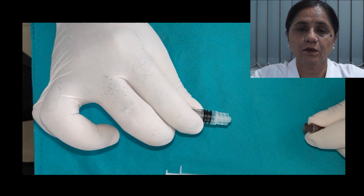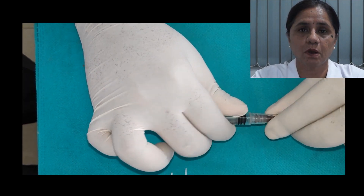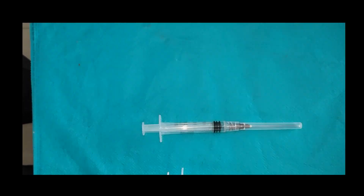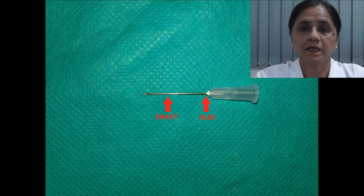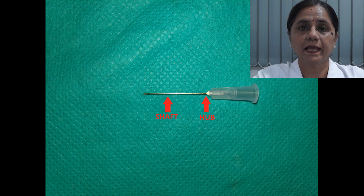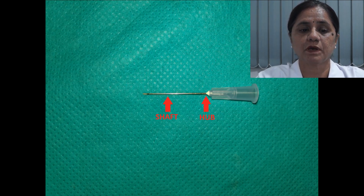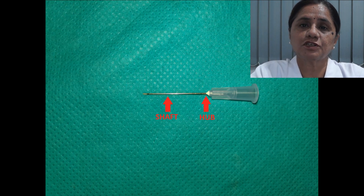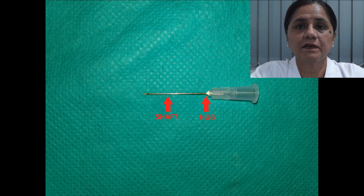The needle is the part of the local anesthetic delivering system which enters the oral tissues. It has two parts: the hub and the shaft. The shaft has the bevel, and the bevel of the needle helps in painless penetration of the intact mucosa. The junction of the hub and the shaft is the weakest part of the needle and the point of fracture.